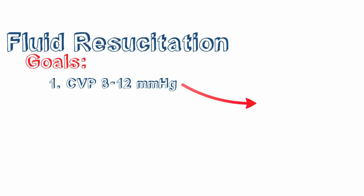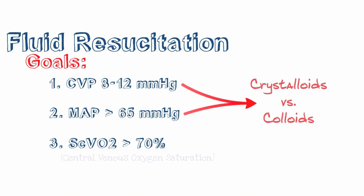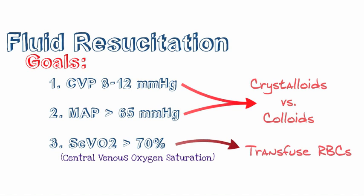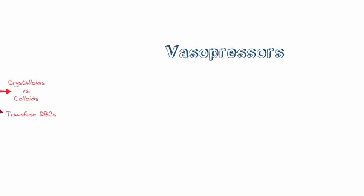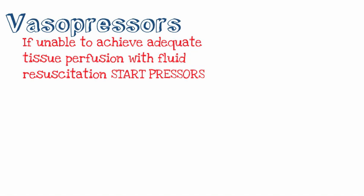In terms of fluid resuscitation, your real goals within the first six hours are: one, a CVP from 8 to 12 — we usually use crystalloids, but some patients can use colloids who do not have a lot of albumin on board; use normal saline or lactated Ringer's. Two, your MAP greater than 65. And finally, your ScvO2 greater than 70% — that's your central venous oxygen saturation. These three factors have been shown to improve survival. To increase your central venous oxygen saturation, one tool you can use is transfusing RBCs to increase your oxygen-carrying capacity.